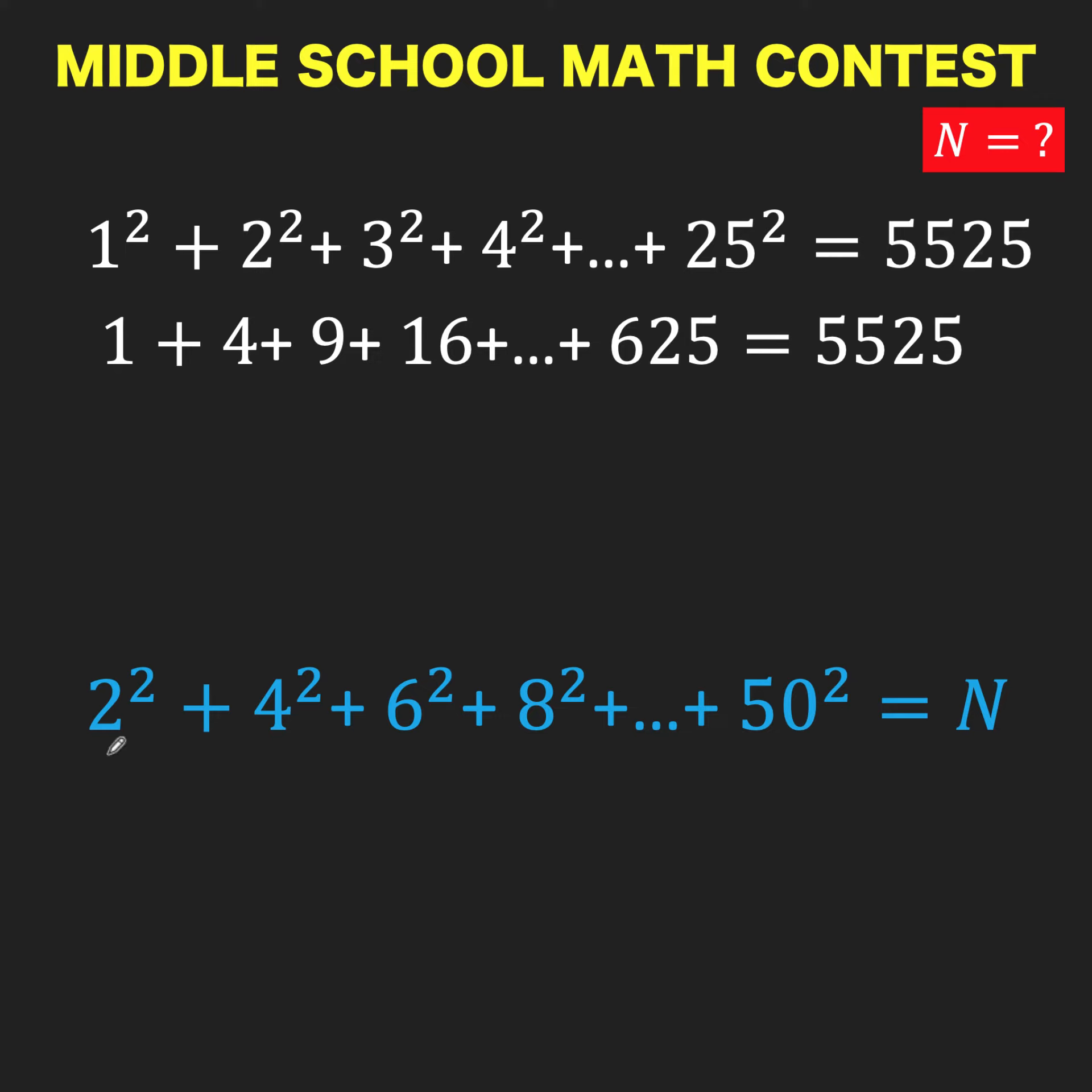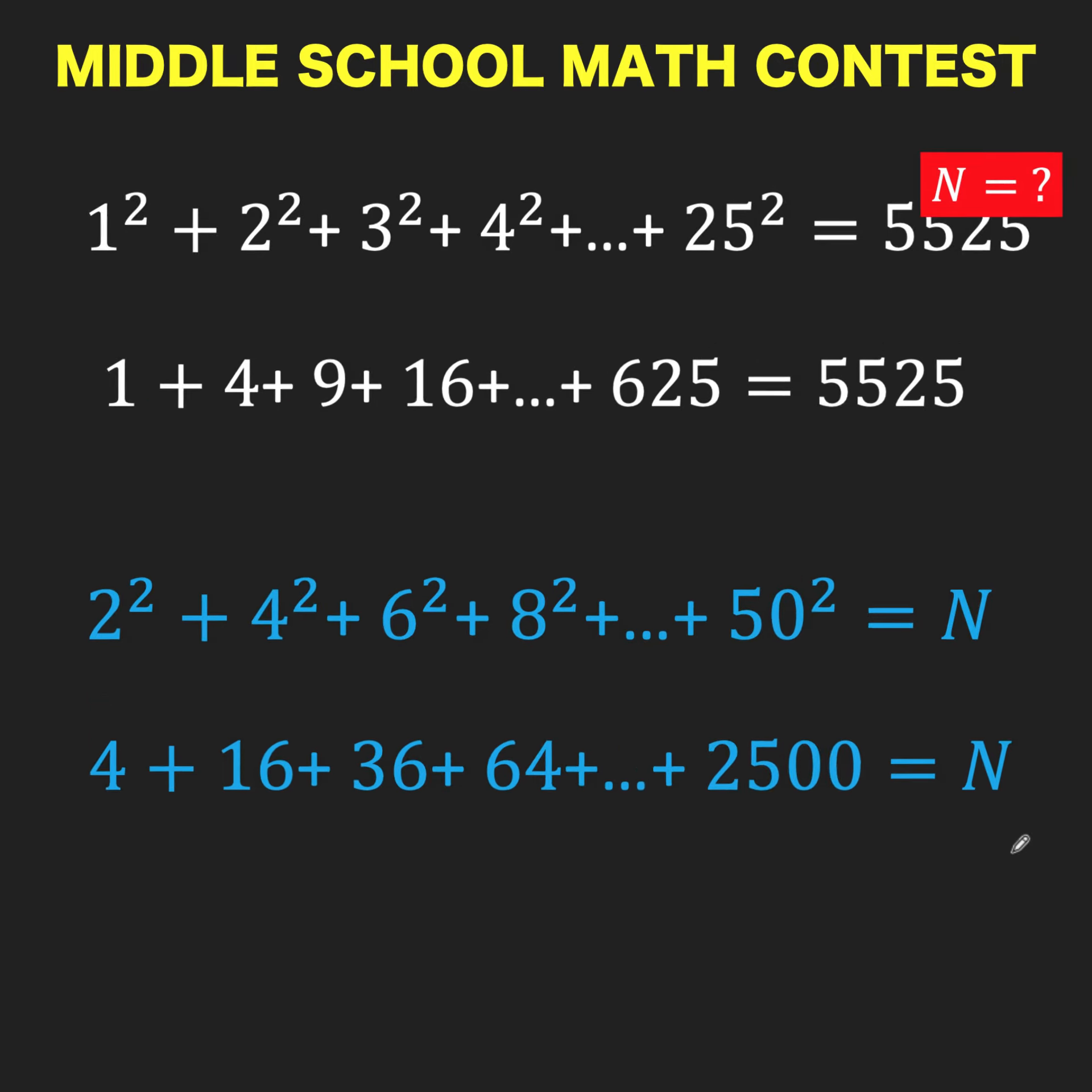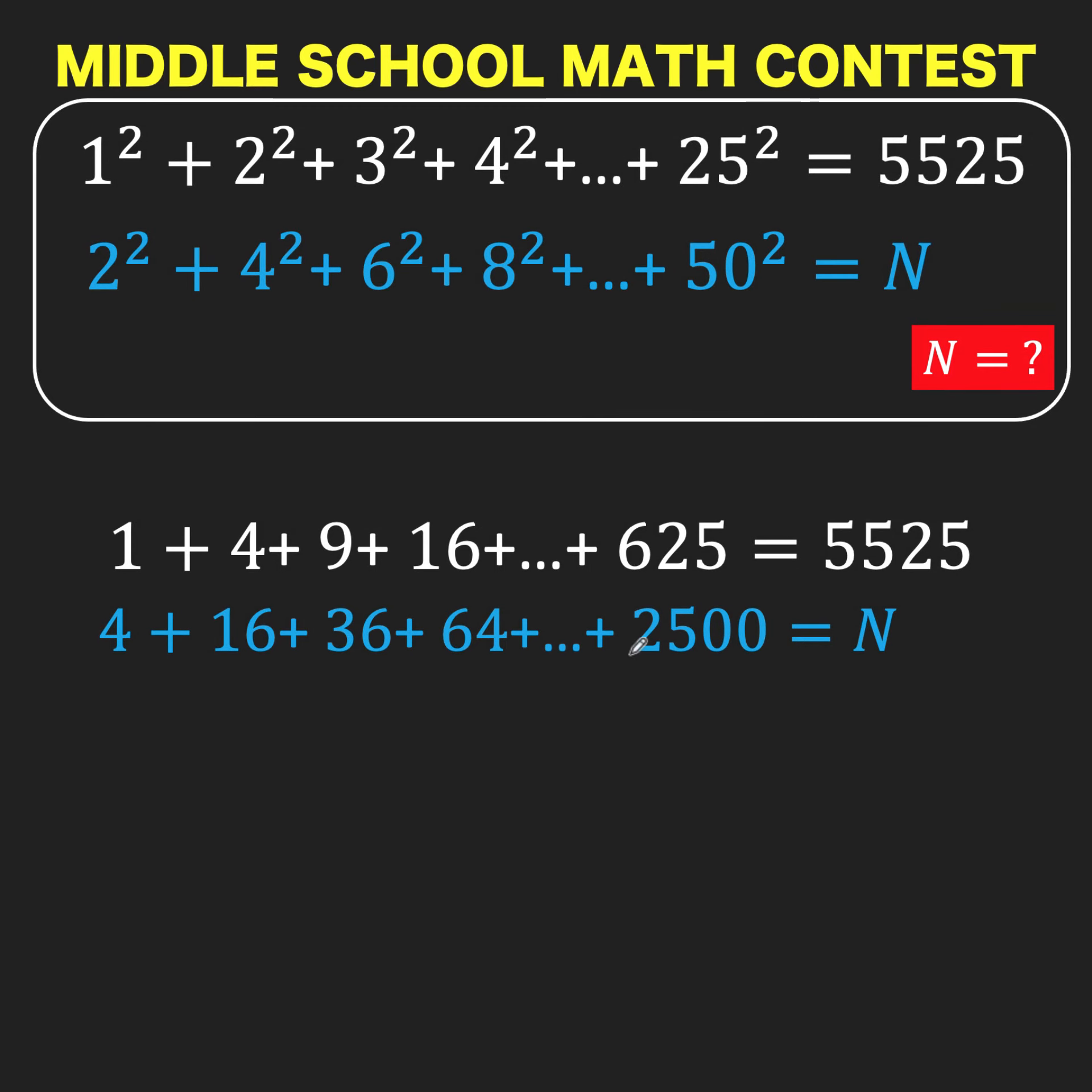Let's also evaluate this blue equation to arrive at 4 plus 16 plus 36 plus 64, until 2500, and that equals N. So that we can see the pattern, let's compare these evaluated forms.